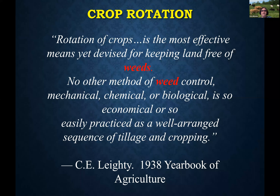Crop rotation is the most effective means yet devised for keeping the land free of weeds. No other method of weed control — mechanical, chemical, or biological — is so economical or so easily practiced as a well-arranged sequence of tillage and cropping. And this was in 1938 — being able to think about utilizing biologically based tools to manage the issues that you have. Instead of managing utilizing chemical and mechanical tools first, use biological tools first.